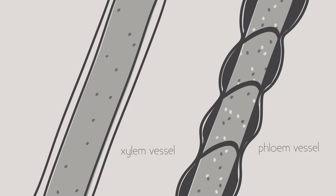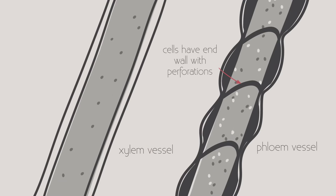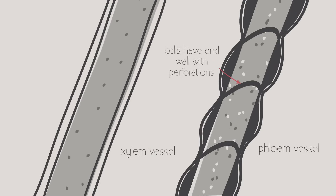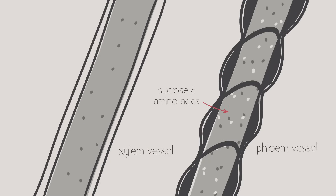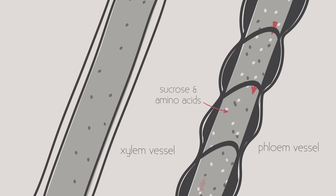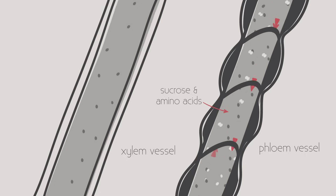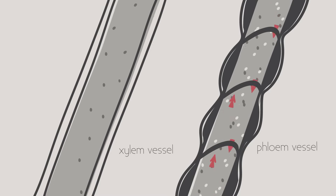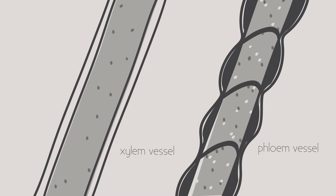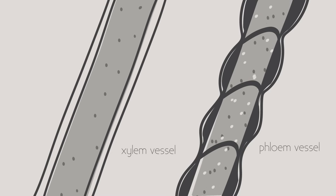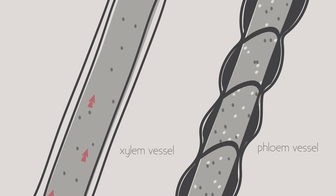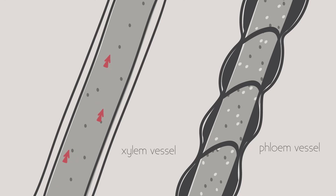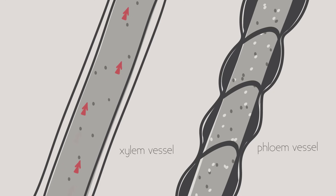The phloem vessels are made up of living cells. They transport sucrose and amino acids up and down the plant depending upon where they are needed, whereas in the xylem the movement is just one way, from the roots up to the leaves.